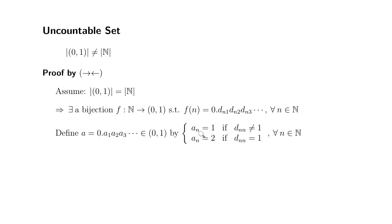What does that mean? An is the nth digit of a, which is going to be always different from the nth digit of f of n. So which means that this particular number a is always going to be different from f of n, at least in one digit.